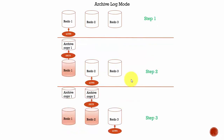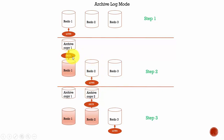Now let's see how the same thing happens in archive log mode. In step one, the log writer writes the redo data into redo log file 1. When redo log file 1 is full, the log writer moves to the second redo log file and starts writing. While the log writer is writing into the second redo log file, there is another process called the archiver process, which takes the data from the first redo log file and copies it into an archive file.